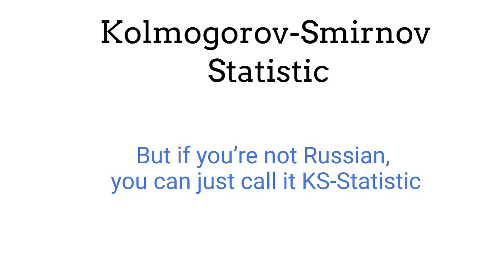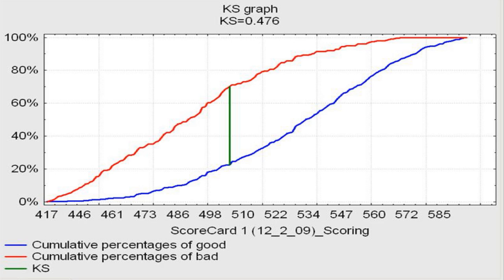Similar to the Gini, the KS measures how well a model can distinguish between good and bad customers. It does so by first creating a KS graph of the cumulative distribution function for the good and bad customers. In the graph, the x-axis represents the credit scores, and the y-axis represents the percentage of customers that have scores below that particular credit score.